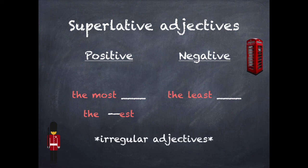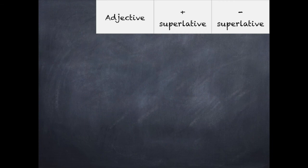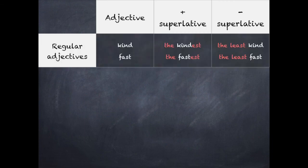We also have irregular adjectives. On this chart we are going to learn all about them. For regular adjectives like 'kind' or 'fast', we will use the superlative plus form: 'the kindest', 'the fastest'. Or in the negative form: 'the least kind', 'the least fast'.